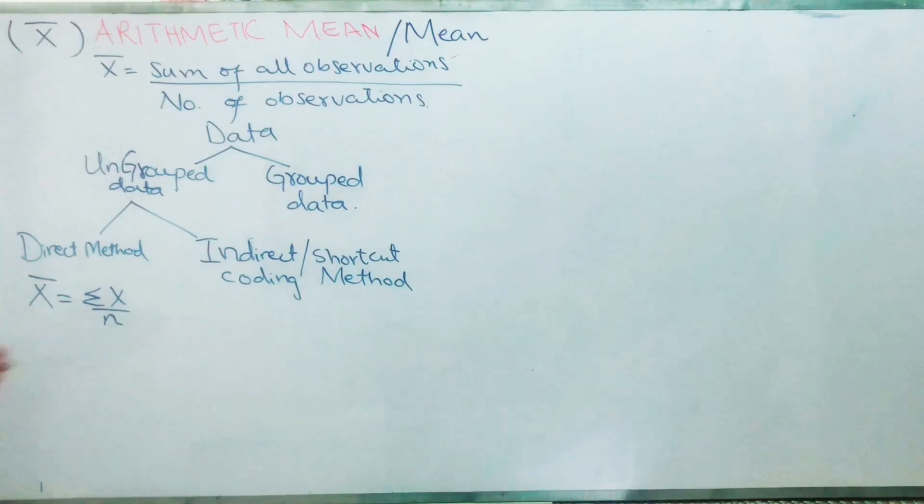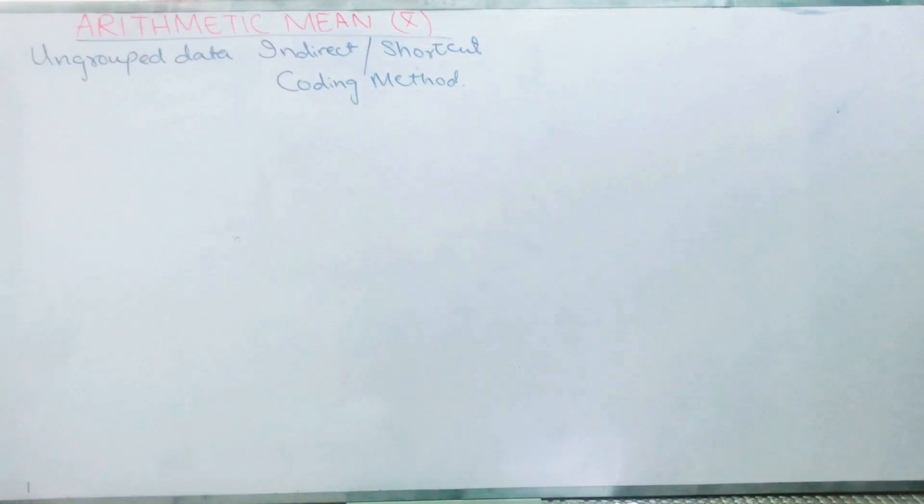By using this formula, in today's video we are going to do the indirect method, which is also called the shortcut method or coding method. So let's start. This method can be done by two ways.